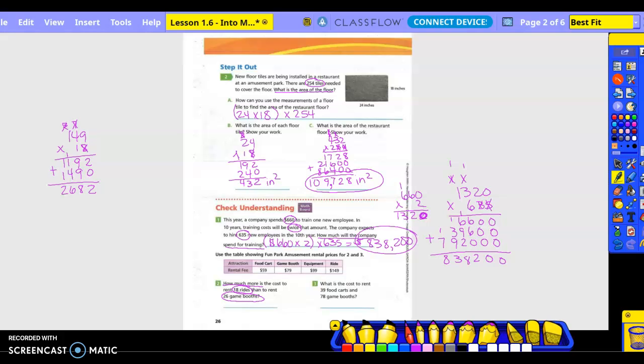Now what do we do? 79 times 26. 6 times 9 is 54, carry the 5. 6 times 7 is 42 plus 5 is 47. Mark off and put a 0. 7 times 9 is 63 carry the 6. 7 times 7 is 49 plus 6 is 55. Add them. 4, 5, 10 carry the 1, 12, so $2,054. Now what do I do? Subtract. So 2,682 minus 2,054. This becomes a 12, this becomes a 7. 12 minus 4 is 8. 7 minus 5 is 2. 6 minus 0 is 6. The difference is $628.